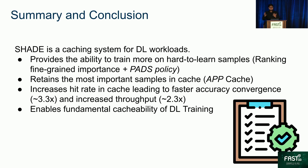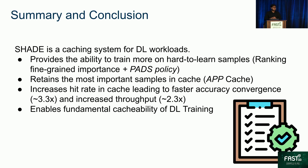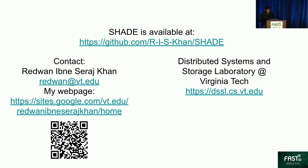In summary, we saw how naively caching data samples does not lead to any noticeable benefits. Shade, a caching system for DL workloads, takes advantage of fine-grained importance scores of samples to cache the most valuable samples. It provides the ability to train more on hard-to-learn samples using rank-based scores and the pad sampling policy, and retains the most important samples in the cache using the app cache. Through these techniques, Shade increases the hit rate, leading to faster accuracy convergence and increased throughput, enabling the fundamental cacheability of deep learning training. Shade is open source — feel free to try it out and check out the work at the Distributed Systems and Storage Laboratory at Virginia Tech. Thank you, and I'm open to questions.